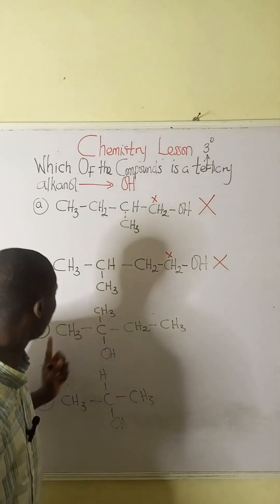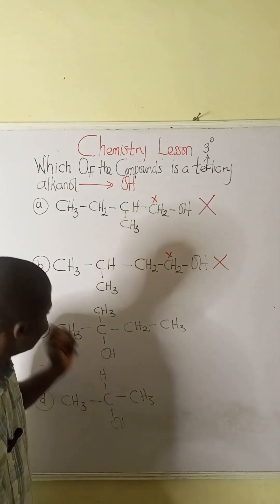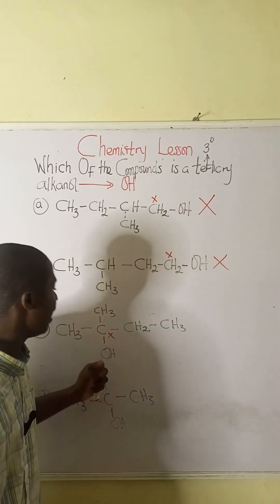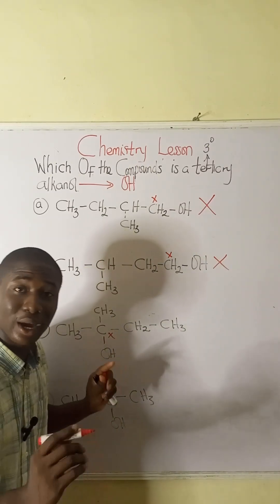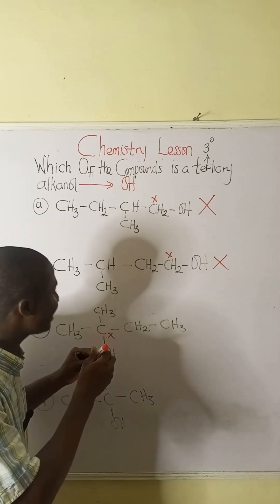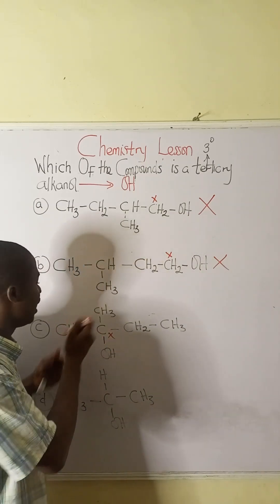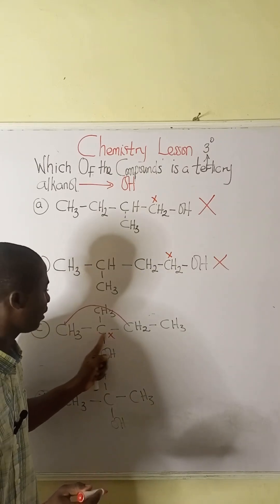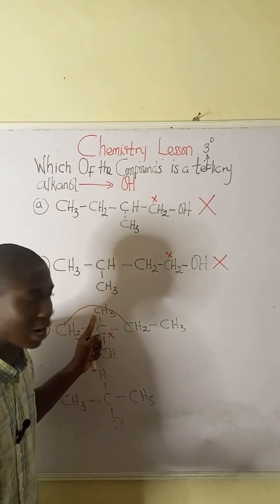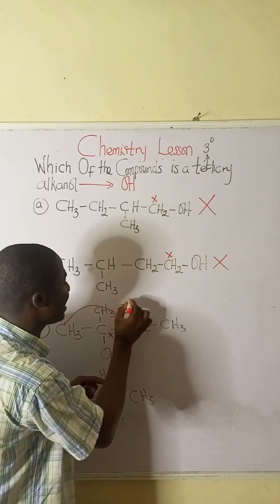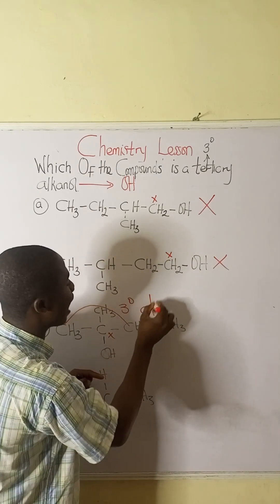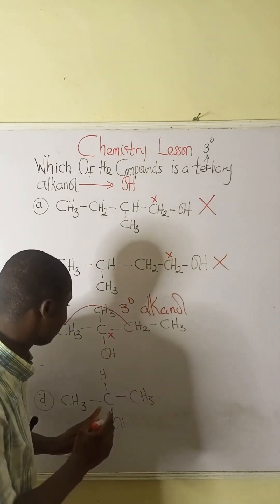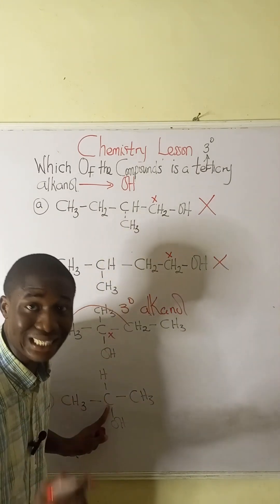Looking at option C, this is the carbon atom that bears the OH functional group. You can see that it is directly attached to three other carbons — directly attached to this carbon, this carbon, and this carbon. So this compound is a tertiary alkanol.